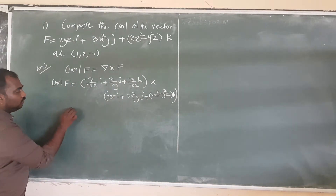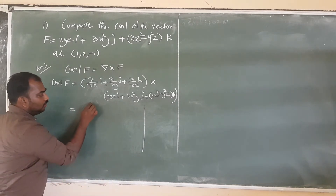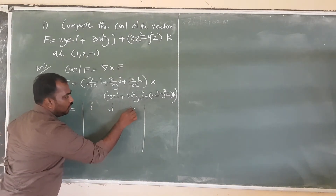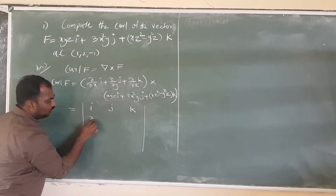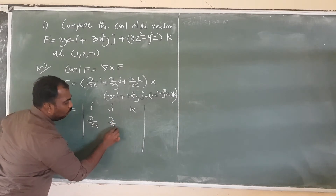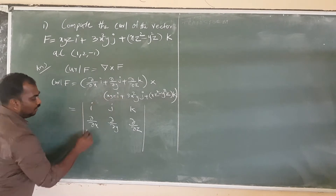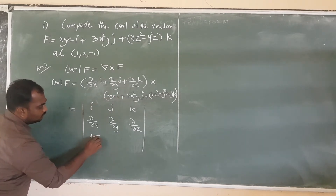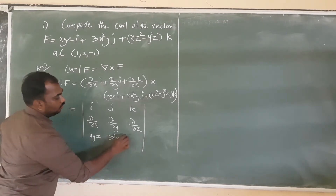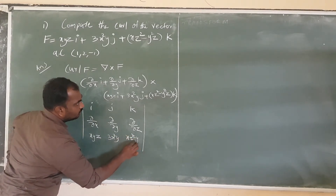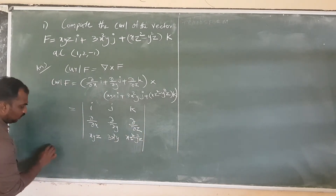We are computing the cross product. Setting up the determinant with i, j, k in the first row; ∂/∂x, ∂/∂y, ∂/∂z in the second row; and xyz, 3x²y, (x²minus y²)z in the third row.